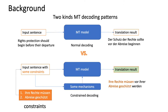First, let me give the background of our work. In our work, we see there are two kinds of decoding patterns in machine translation. The first one is normal decoding. Most machine translation models accept plain sentences and get the translation result. For example, when I provide an English sentence to the English-German machine translation model, it produces German sentences directly.